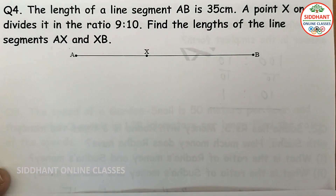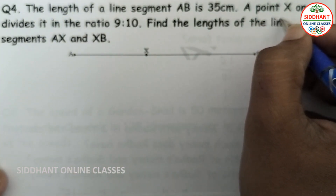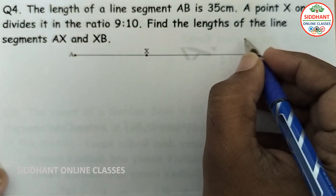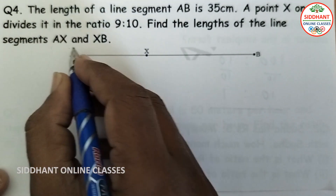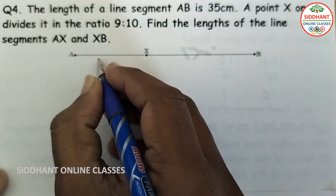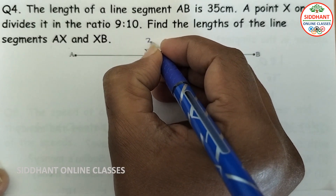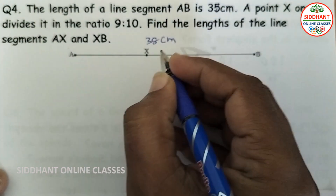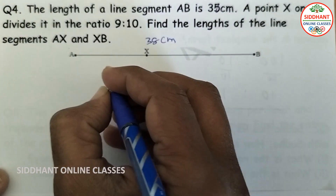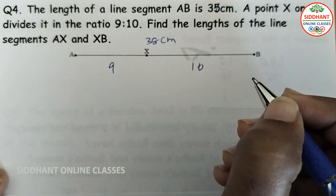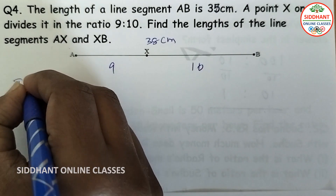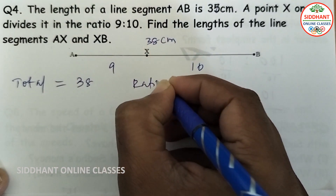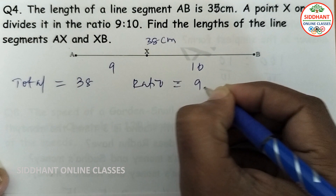Question number 4: The length of line segment AB is 35 cm. A point X on it divides it in the ratio 9 is to 10. Find the lengths of AX and XB. AB is 38 cm, and AX and XB are divided in ratio 9 is to 10, giving a total of 19 parts.